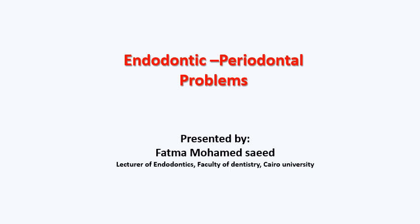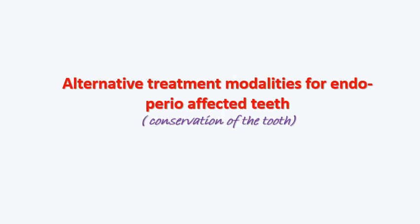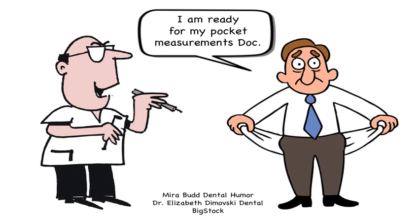Hello dear students, today we're going to continue our chapter on endodontic-periodontal problems. Last session we took the classification of endodontic-periodontal lesions and the management of each class. Today we're going to talk about the alternative treatment analysis for endodontically affected teeth — when normal treatment lines fail in the management of these lesions, we go for alternative approaches.